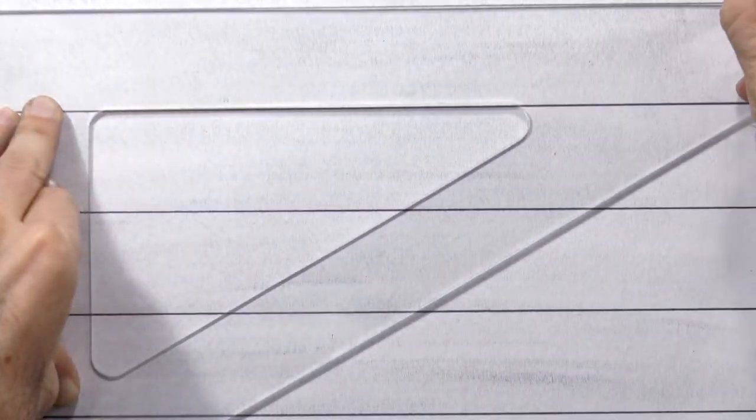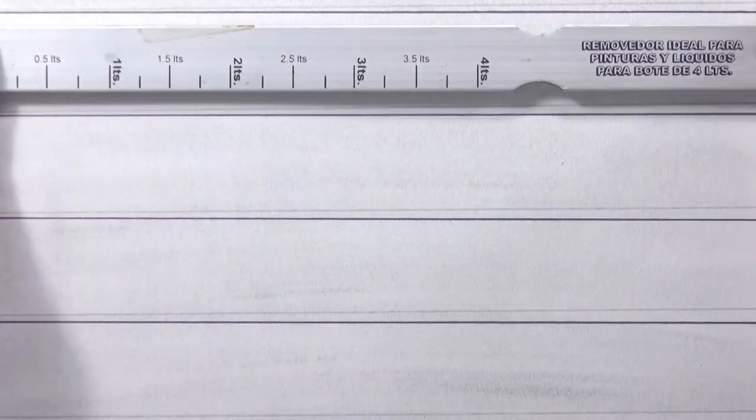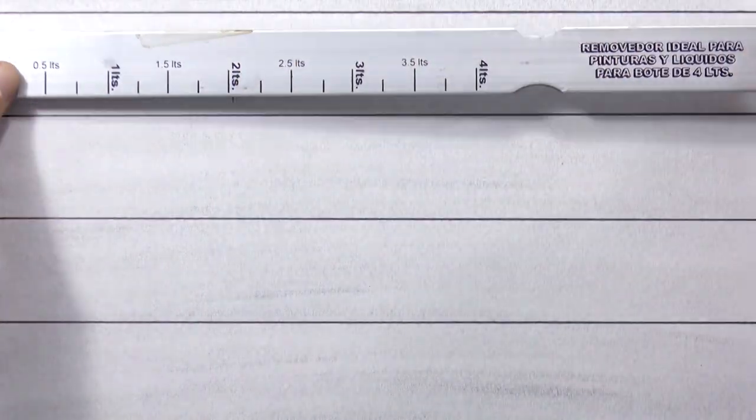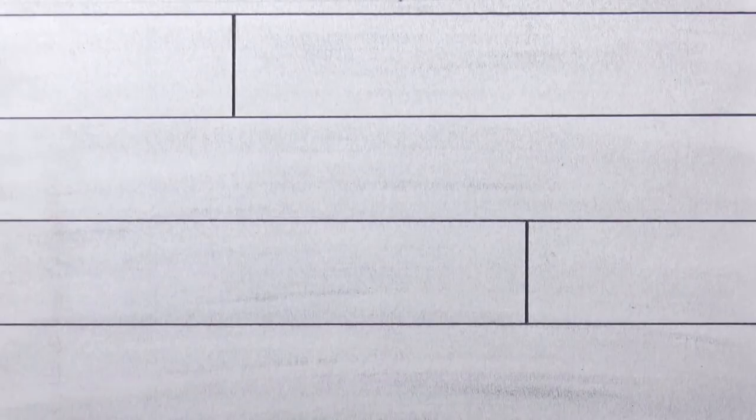By the way, the graphite powder is the one I saved when sharpening the leads on my lead holders. Now using a ruler I mark a division in a couple of the tiles. That ruler was one of those to measure how much paint is in a paint bucket. We make the divisions.